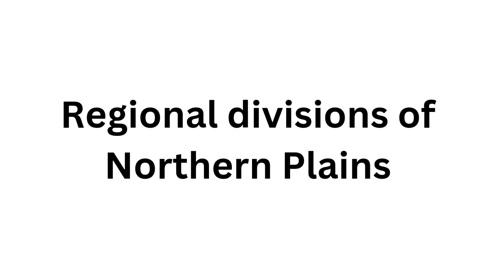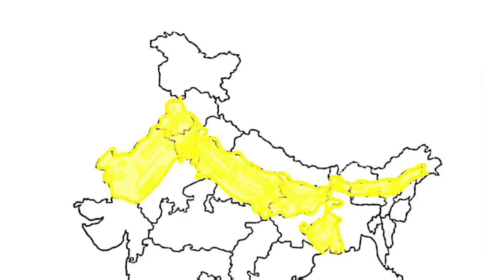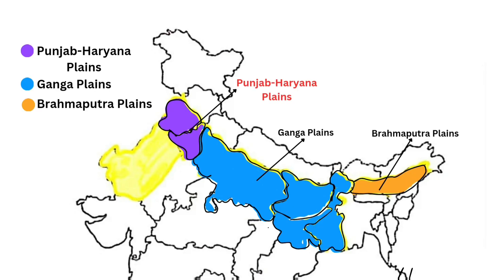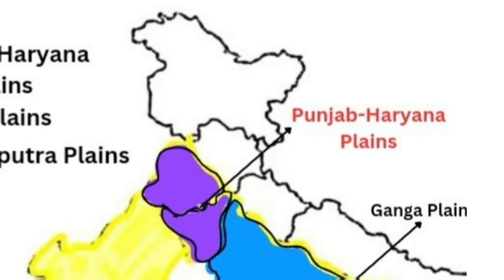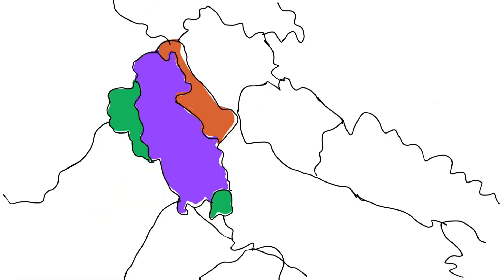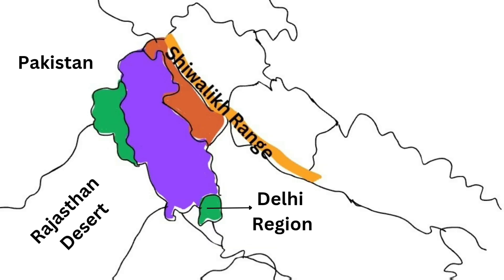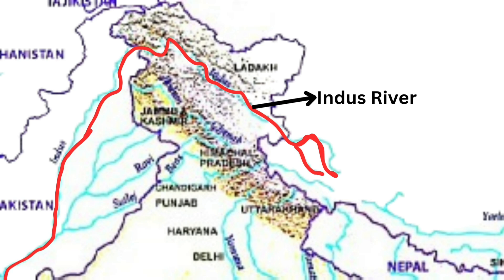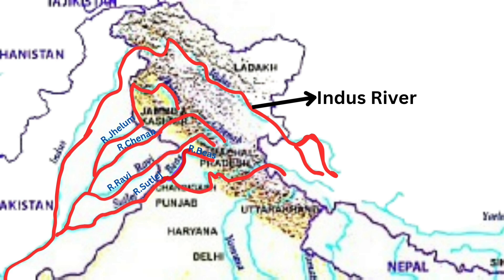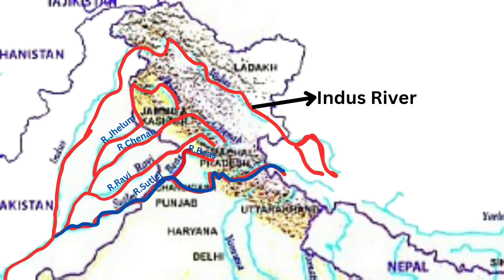Regional divisions of the Northern Plains include Punjab Plains, Ganga Plains, and Brahmaputra Plains. Punjab Plains form the western part of the Northern Plains. It is bounded by the Rajasthan Desert in the south, the Shivalik range in the north, Pakistan in the west, and the Delhi region in the east. It is formed by the river Indus and its tributaries: River Jhelum, River Chenab, River Ravi, River Beas, and River Sutlej.